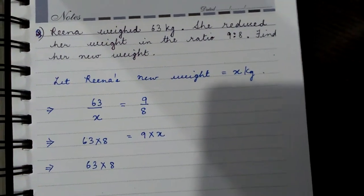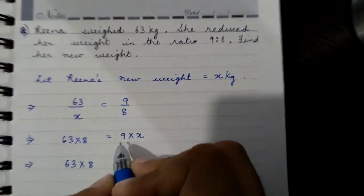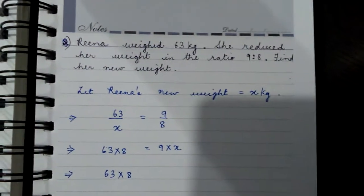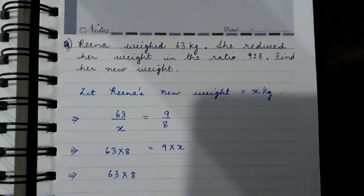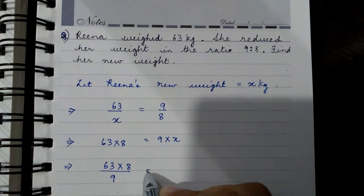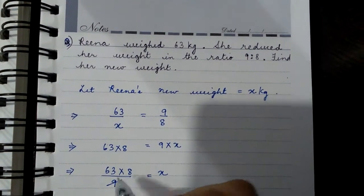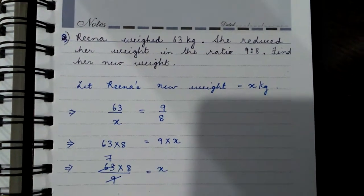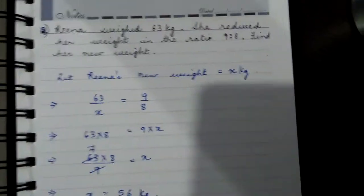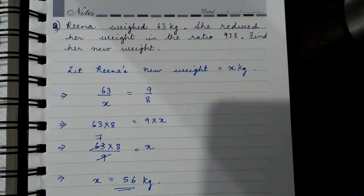So cancelling 9 with 63 gives us 7, then 7 times 8, so x is 56 kg. So Rina's new weight is 56 kg.